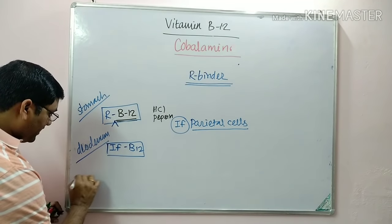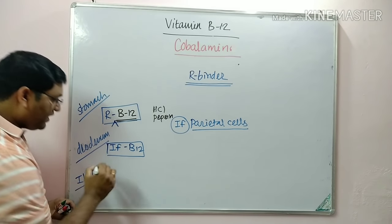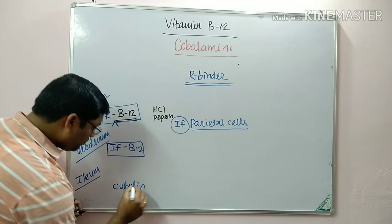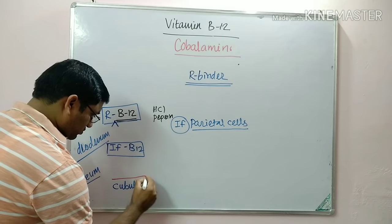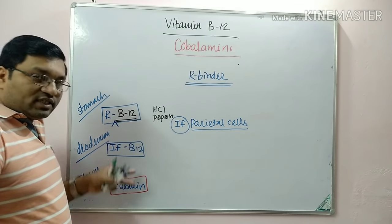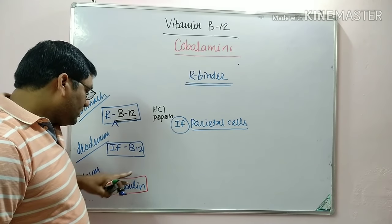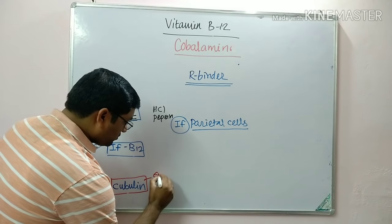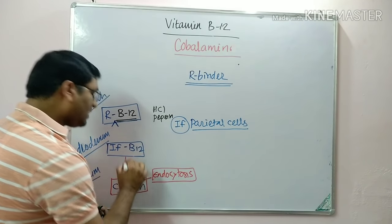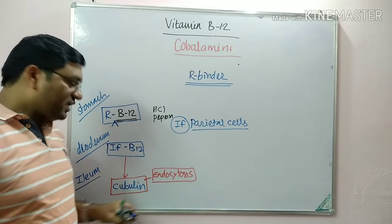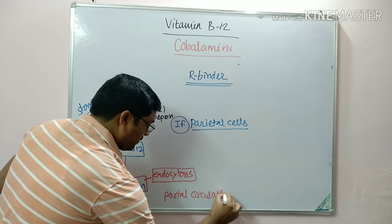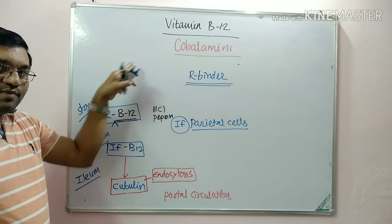When it reaches the ileum, there are special receptors for intrinsic factor known as cubulin receptors. These receptors are present on the intestinal side of ileal cells. When the intrinsic factor–B12 complex reaches the cubulin receptors, with the help of endocytosis this complex is internalized into the ileal mucosal cell, and from there it enters the portal circulation.